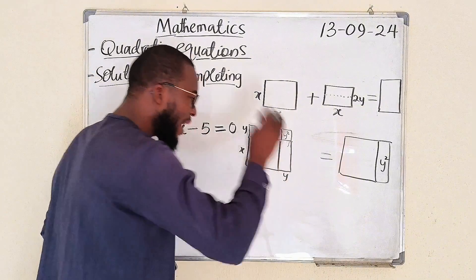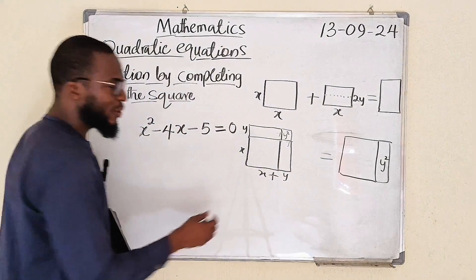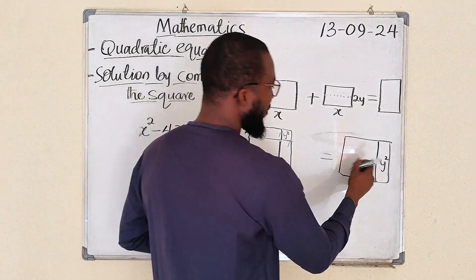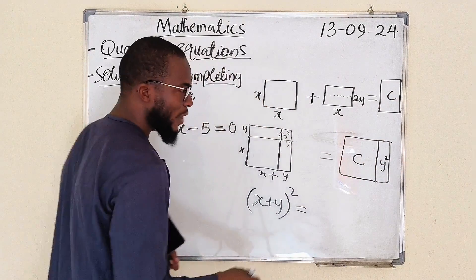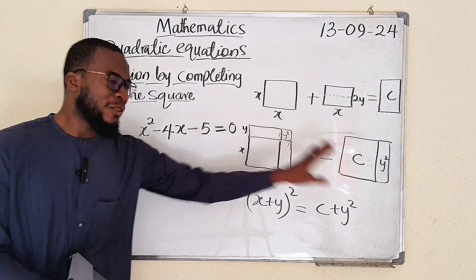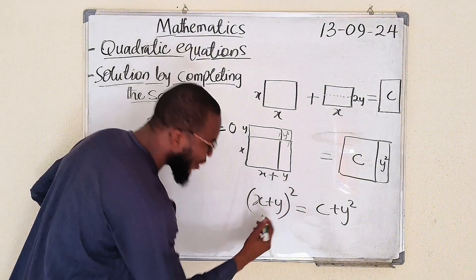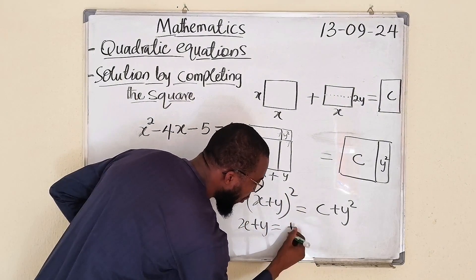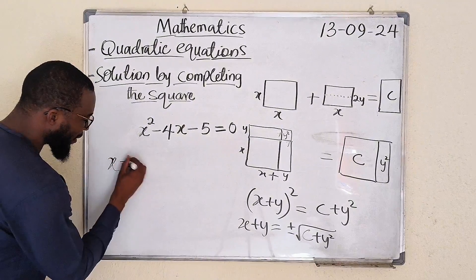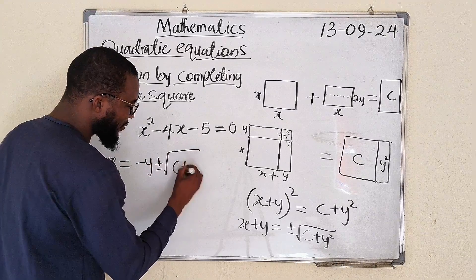Remember, we are dealing with an equation. Whatever you do to one side, you have to do it to the other side. So I place y squared on the right side as well. Because I have added y squared here to make it a complete square, I have to add y squared to the other side to keep the equation balanced. The area of this complete square is x plus y squared, and it will be equal to c plus y squared. We want to transform the equation into this form. Since we are solving for x, take the square root of both sides to eliminate the power of 2. So x plus y equals plus or minus the square root of c plus y squared. Finally, to find the value of x, take y to the other side: x equals negative y plus or minus the square root of c plus y squared.